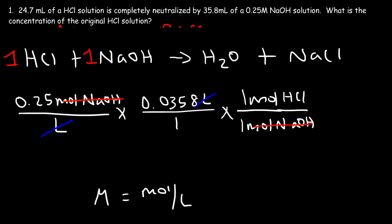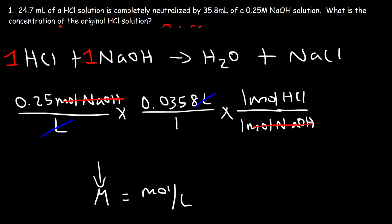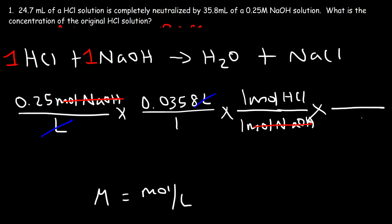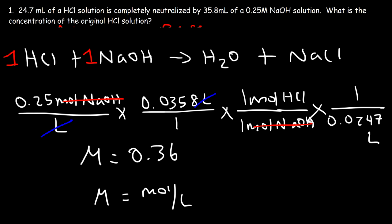The unit 'moles of NaOH' cancels, leaving moles of HCl. To get molarity we divide moles by liters. Converting 24.7 milliliters gives 0.0247 liters. The calculation is 0.25 × 0.0358 ÷ 0.0247, and you get the same answer: 0.362 moles per liter. You can find the concentration of HCl using both techniques.